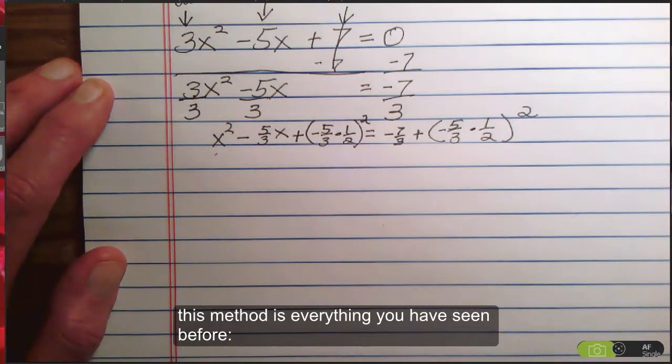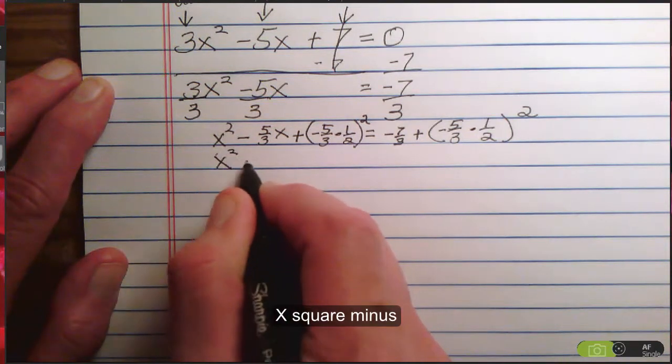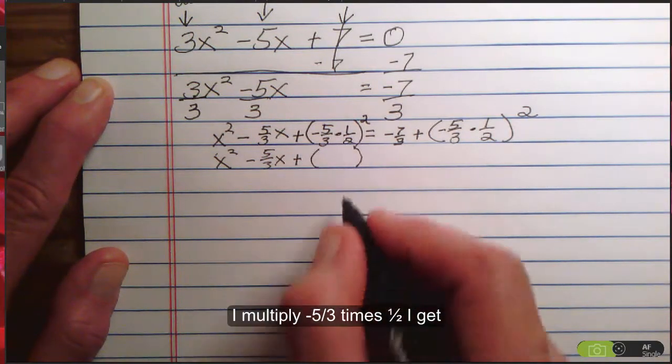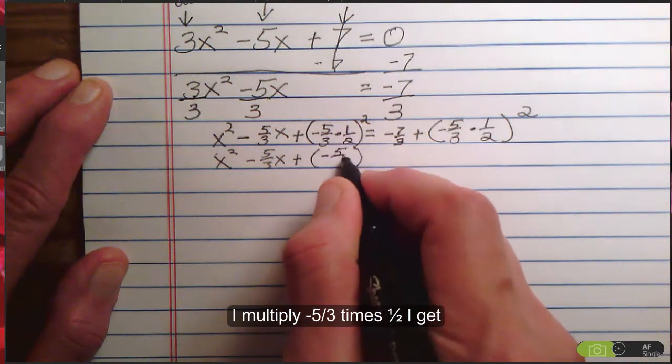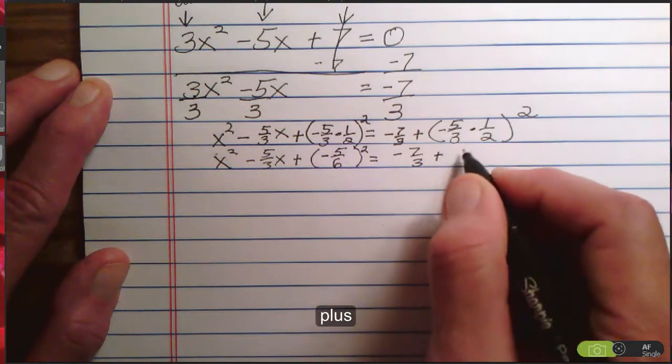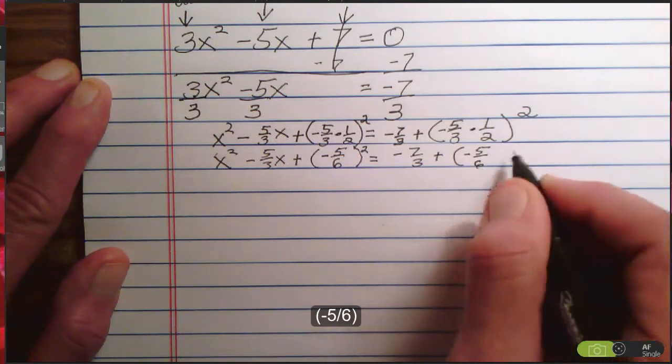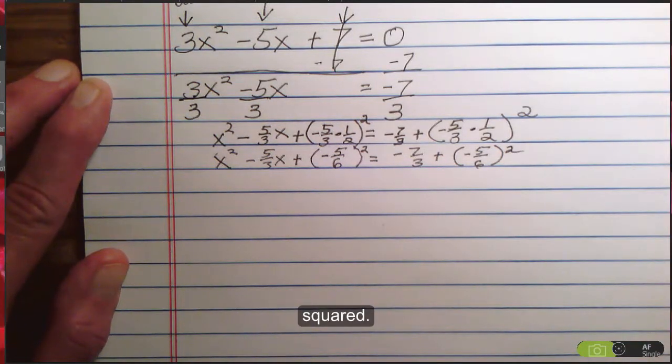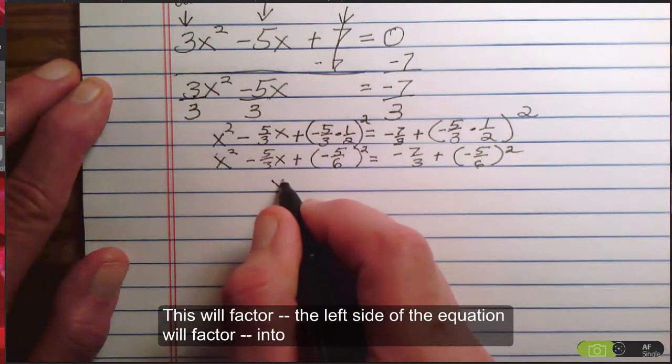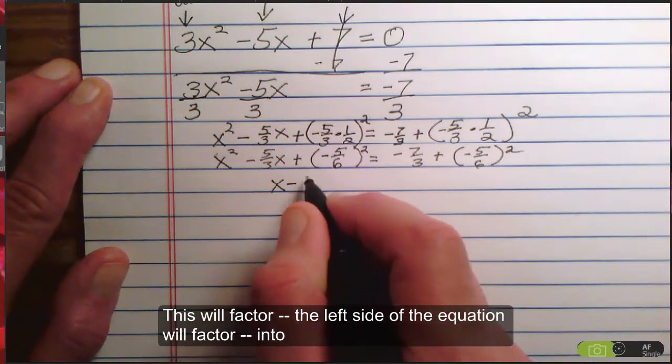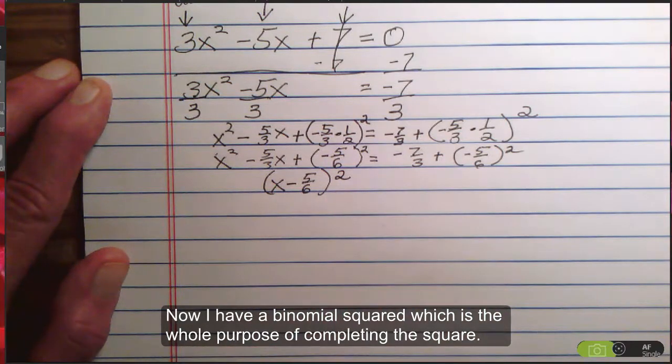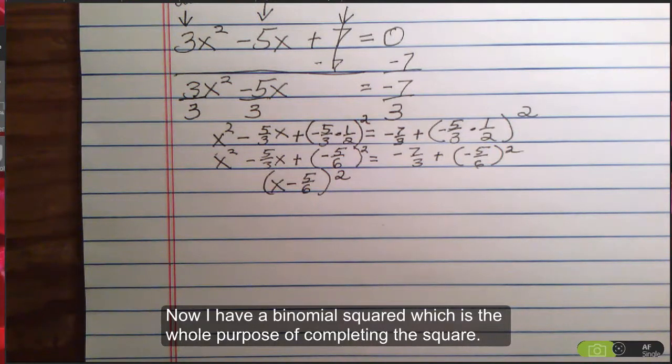From here on out, this method is everything you've seen before. x² - 5/3x plus, I multiply -5/3 times 1/2, I get -5/6 squared equals -7/3 plus -5/6 squared. Now, back to the left side of the equation. The left side of the equation will factor into x - 5/6, I put parentheses around it, and square it. Now I have a binomial squared, which is the whole purpose of completing the square.